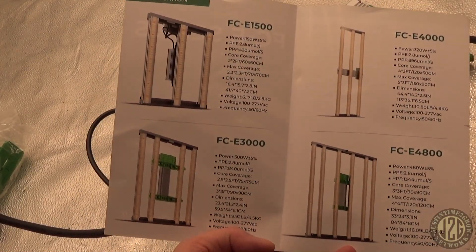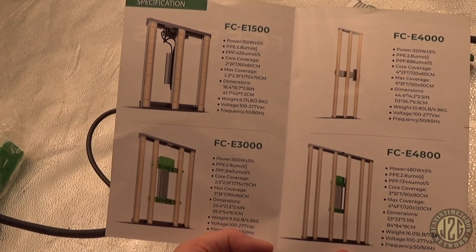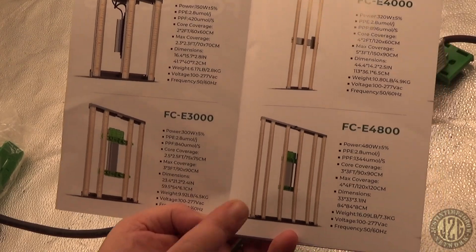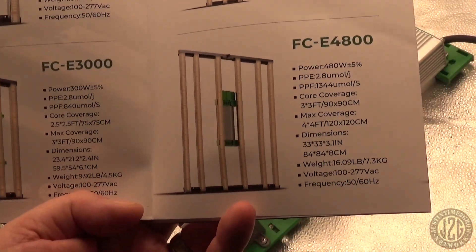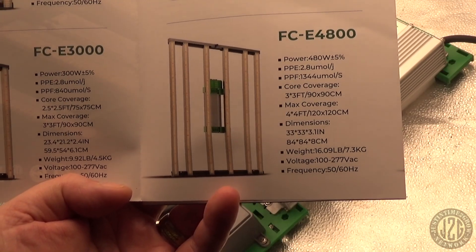The FCE, you just save a little bit of money and you sacrifice a little bit of the quality, but it's still a great light though. This is showing you the different ones that they offer: the 1500, the 3000, the 4000, the 4800 which is what we're testing today. That is the specs on that if you want to take a look at it.